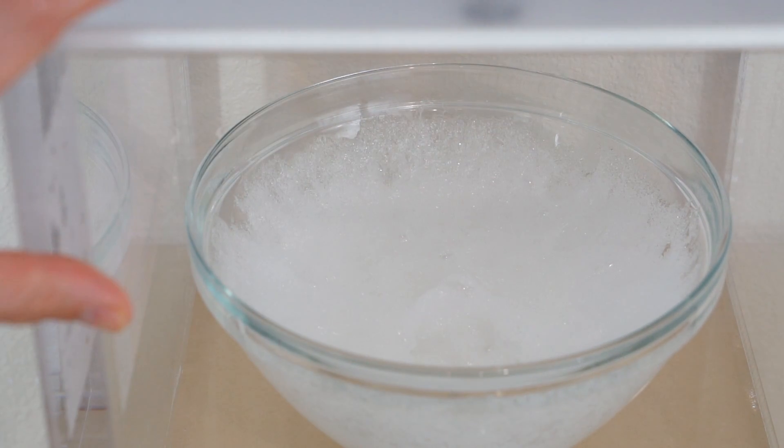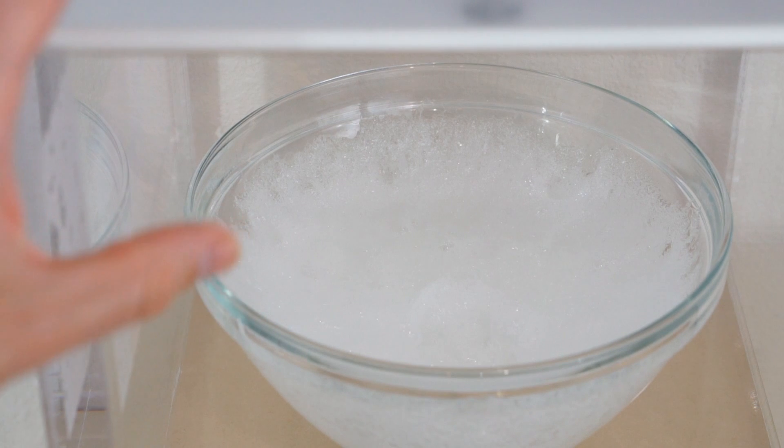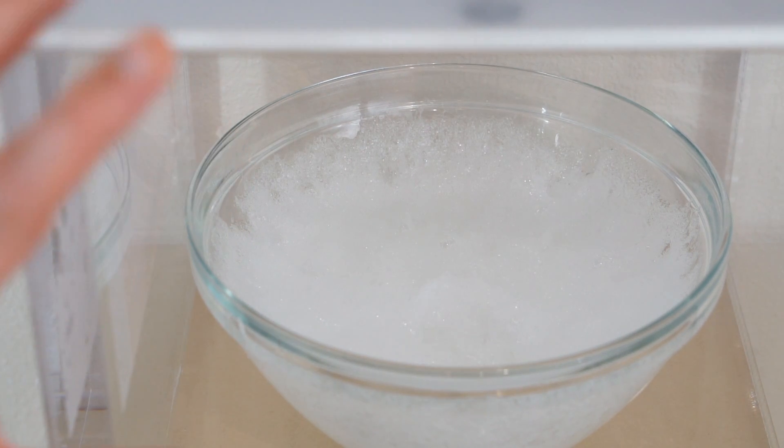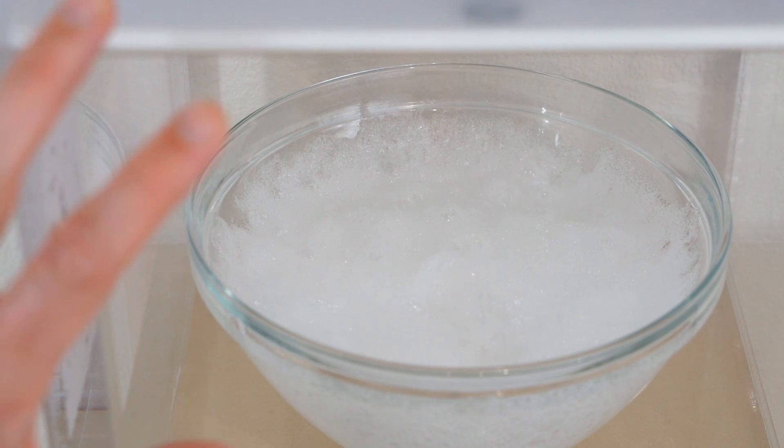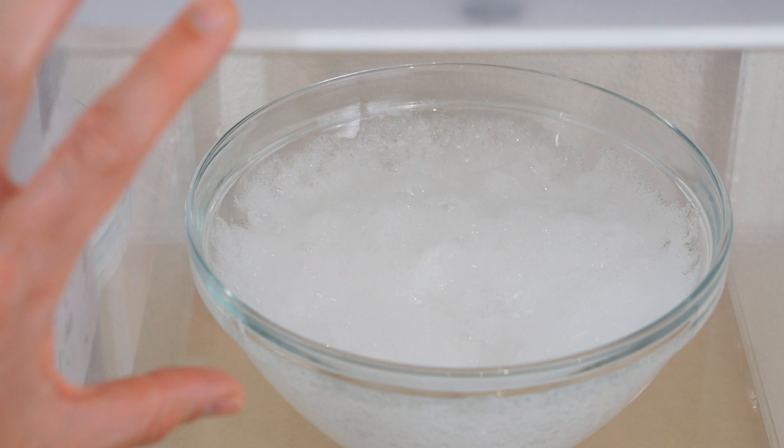So this is actually what vacuum chambers are used for is for degassing things. Usually you'll degas resins in these where you don't want them to have air bubbles. Like when you make carbon composites you mix carbon fibers with epoxy resins and you don't want any air bubbles because it weakens it. So you use vacuum chambers to vacuum out all the air bubbles inside of it. So besides making cool YouTube videos, that's what you use vacuum chambers for.